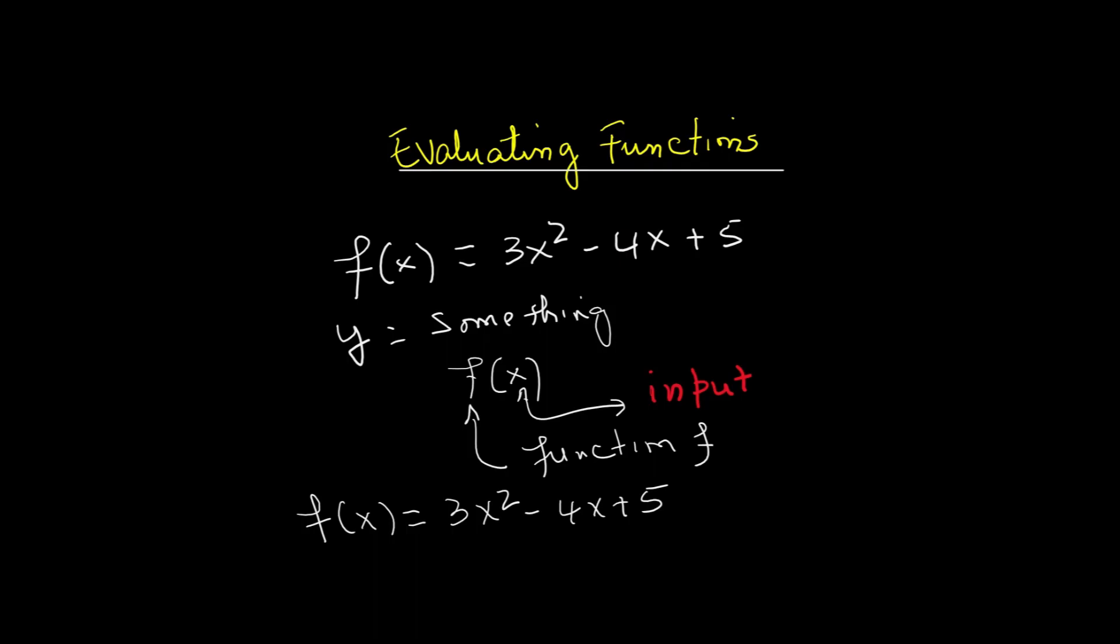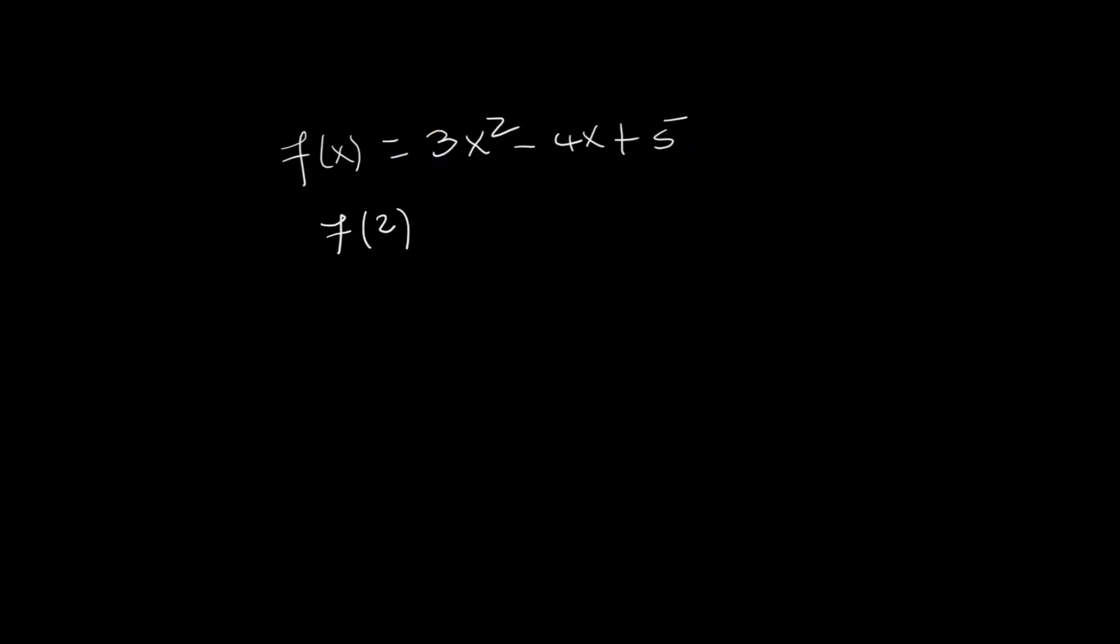Let's try our first example. Evaluate f(2). We plug in 2 everywhere we see x. So f(2) = 3(2)² - 4(2) + 5. First, 2 squared is 4. Then 3 times 4 minus 8 plus 5. Now we have 12 - 8 + 5. 12 - 8 is 4, and 4 + 5 = 9. So the input is 2 and the output is 9. That means f(2) = 9.